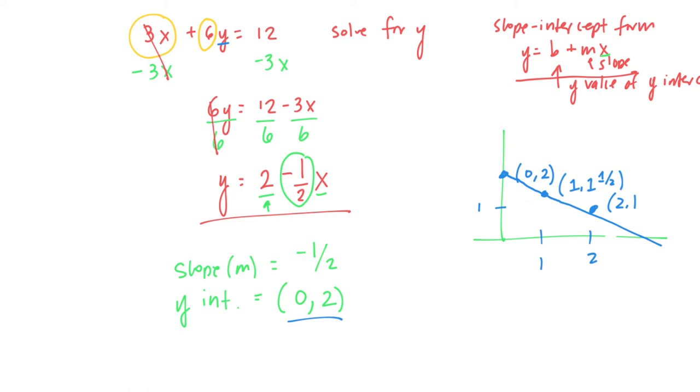And so by solving for y, we put this equation into a form where we can easily find the slope, which is the coefficient of x. So that's the number that's added or subtracted, and we can find the y-value of the y-intercept, which is the number that's not with x. That's where it starts.